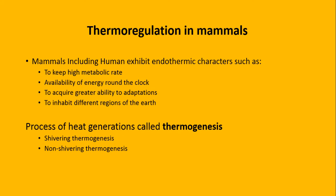Thermoregulation in mammals میں basic points کی بات کریں تو ان کے اندر کچھ endothermic characters ہیں including human beings۔ Number one: to keep high metabolic rate - وہ اپنا metabolism تیز کر لیں گے جس کی وجہ سے maximum heat generate ہوگی ان کی body میں۔ Availability of energy round the clock - وقت کے ساتھ ساتھ جتنی energy available ہوگی body اس کو provide کرتی رہے گی۔ To acquire greater ability to adapt and inhabit different regions of the earth - یہ چار endothermic characters ہیں۔